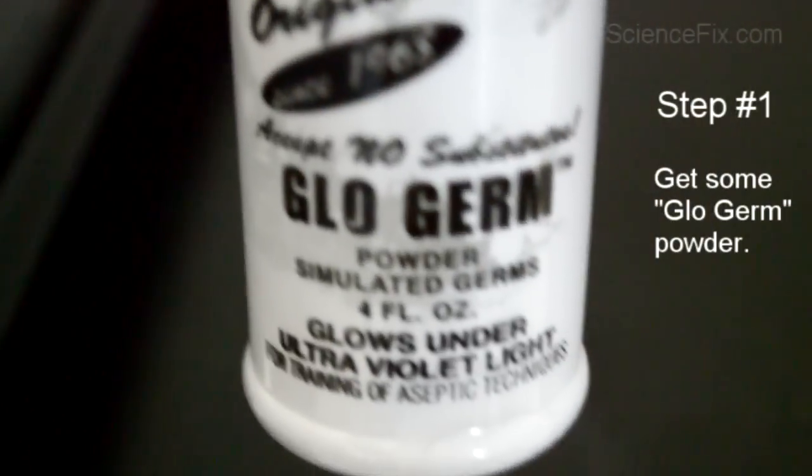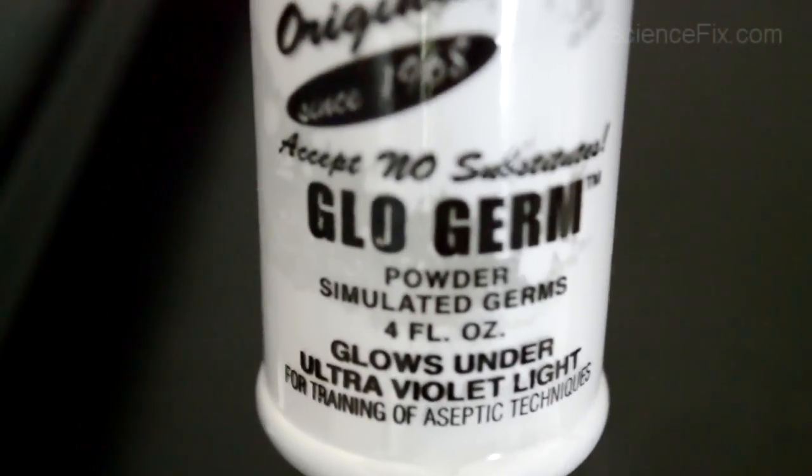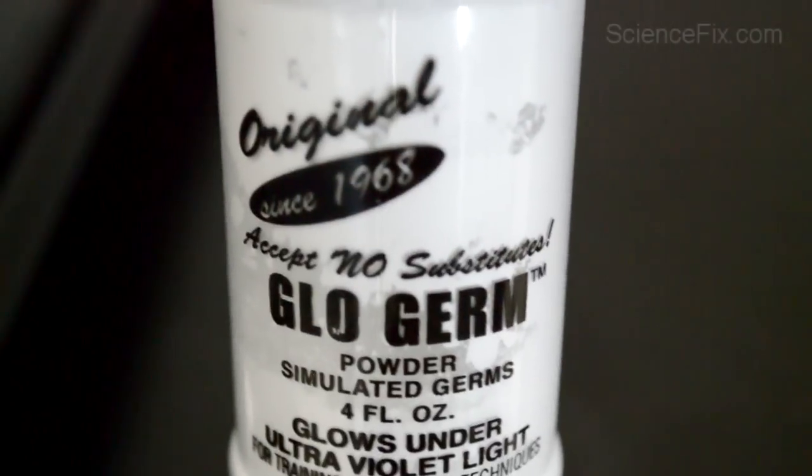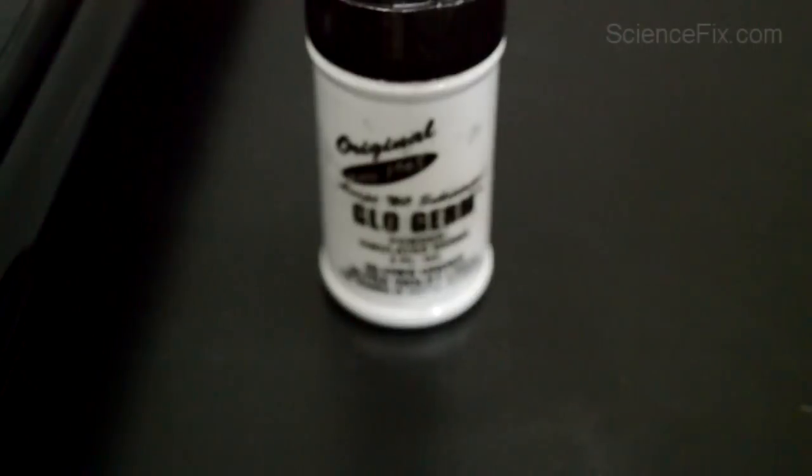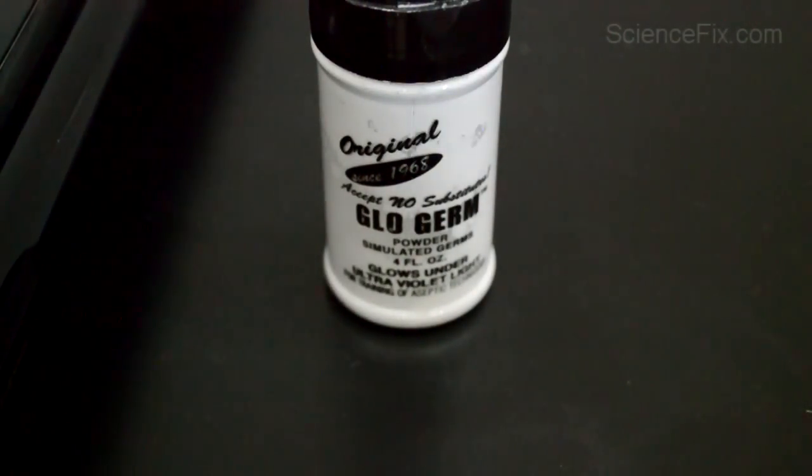This is a tool that's used to show how to use good hand-washing techniques to effectively get rid of all the dirt and germs that might be on your hands. As you can see, in the presence of a black light, the white powder will glow.